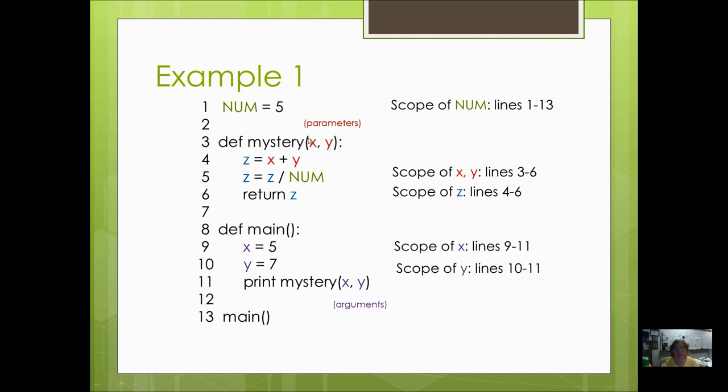Now, let's take a look at x and y. They are parameters, so they are local variables to this function, and therefore they can only be accessed in this function only. The scope of x and y is lines 3, that's where it's first declared, through 6, and that's it. I cannot try to use this x down here. They're different. z is also a local variable for this function. Its scope is lines 4 through 6. I can't use it above, only from where it's declared on.